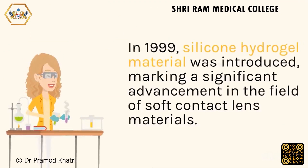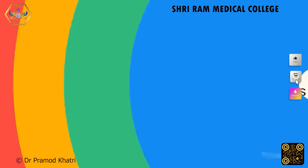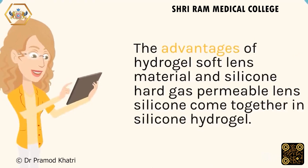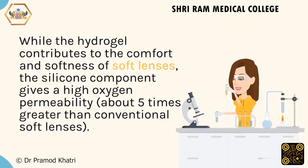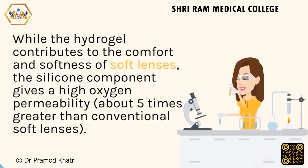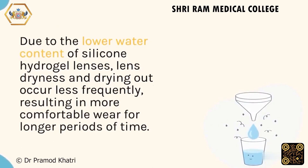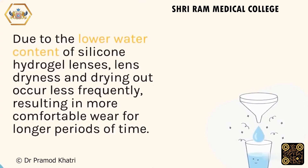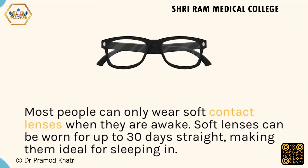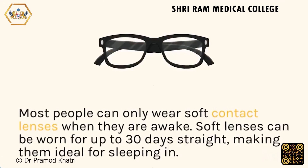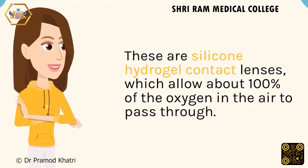In 1999, silicone hydrogel material was introduced, marking a significant advancement in soft contact lens materials. It combines the advantages of hydrogel soft lens comfort and silicone's high oxygen permeability — about 5 times greater than conventional soft lenses. Due to the lower water content of silicone hydrogel lenses, lens dryness occurs less frequently, resulting in more comfortable wear for longer periods. Most people can only wear soft contact lenses when awake, but silicone hydrogel lenses can be worn for up to 30 days continuously, as they allow approximately 100% of oxygen in the air to pass through.